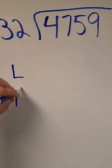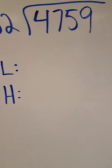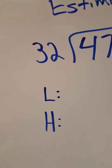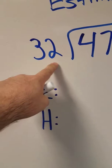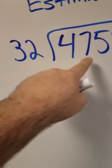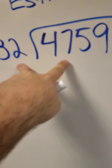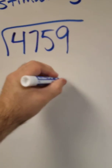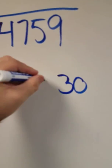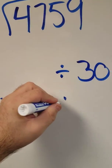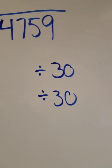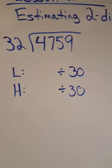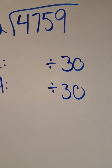So I'm going to do a low and a high estimate. The first thing I'm going to do is look at the divisor. I'm going to say, what number is that near? I can change the divisor, the dividend, or both if I want to. I want to change the divisor to make things easier. 30 is really close to 32, and remember, I'm just estimating. So I'm going to go ahead and change that divisor to 30 — a nice, big, round number.